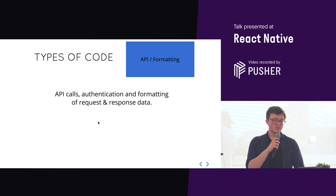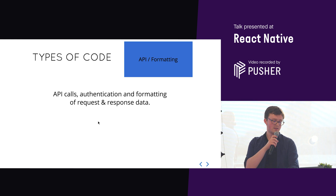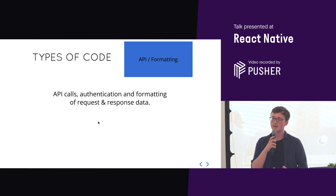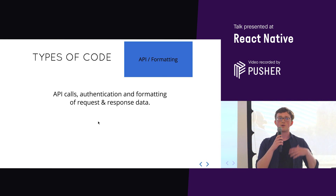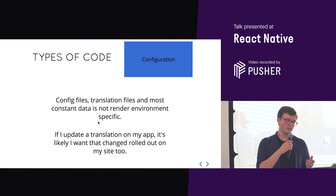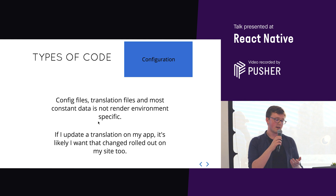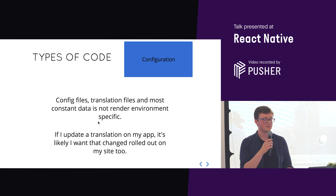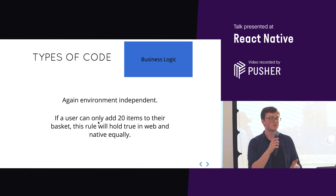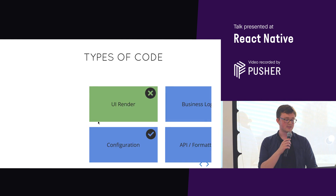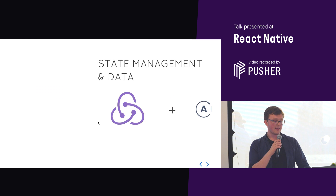Therefore, the styling of the UI should be different between environments. Moving into the other types of code — business logic, configuration, and API formatting — API formatting covers things like function calls, authentication, formatting of requests and responses. That's render-environment independent; we don't mind whether we're rendering in native or web, so we can reuse that code. Configuration covers translations and constants, which aren't render-environment dependent either.